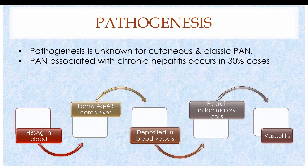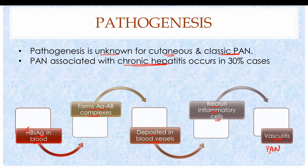The pathogenesis of Polyarteritis nodosa is unknown for cutaneous and classical forms. However, in almost 30% of cases it is associated with chronic hepatitis B virus infection. In such cases, hepatitis B surface antigen production leads to antigen-antibody complex formation, which deposits in blood vessels — most commonly in the visceral region — recruiting inflammatory cells and causing vasculitis.